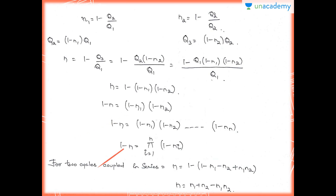That can be written as 1 − η = Π(1 − ηᵢ) for i = 1 to n, meaning the total loss equals the product of losses in all cycles in series. For 2 cycles coupled in series, η = η1 + η2 − η1·η2. Thus, the overall efficiency of 2 cycles coupled in series equals the sum of individual efficiencies minus their product. There is great scope for improving cycle efficiency and achieving fuel economy using multi-fluid coupled cycles. For example, if η1 = 0.5 and η2 = 0.4, then η = 0.5 + 0.4 − 0.5 × 0.4 = 0.7. It is almost impossible to achieve such a high efficiency in a single cycle.